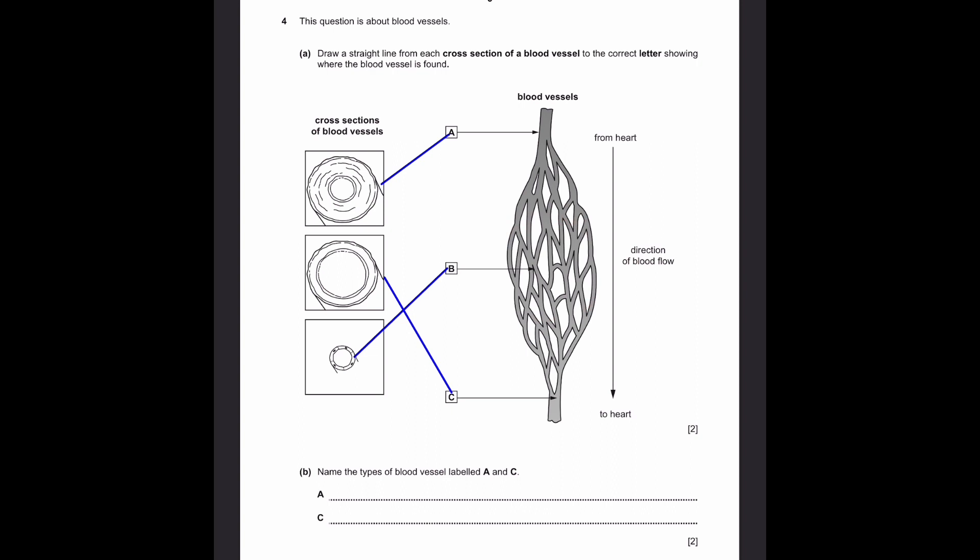B. Name the types of blood vessel labeled A and C. So the blood vessels, we know that carry blood from the heart to the other parts of the body, like the lungs and parts like that. They're called arteries. And that's the name for it. Now for C, what's the opposite? It goes to the heart, the opposite of arteries, veins. I'll explain this a bit more.